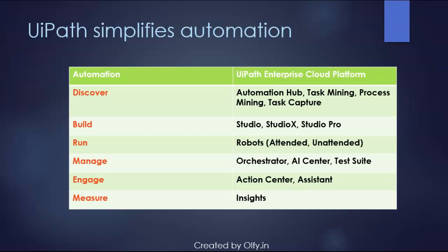The orchestrator is the core of your automation management. It gives you the power to provision, deploy, trigger, monitor, measure, track, and ensure the security of every robot in your organization. You can manage everything from your browser or even your mobile device. You also have the AI Center, which pulls together RPA developers, business users, and data scientists.